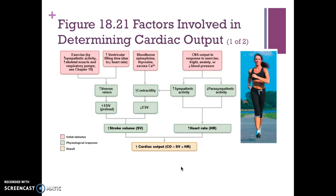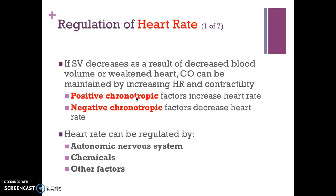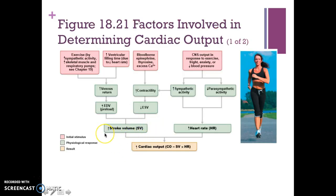Figure 18.21 is a nice summary of the factors determining cardiac output. Cardiac output is affected by stroke volume and heart rate. Increased EDV, or preload, results from increased venous return, which is caused by increased ventricular filling time due to a decreased heart rate and also exercise. If stroke volume decreases due to decreased blood volume or a weakened heart, cardiac output can be maintained by increasing the heart rate.